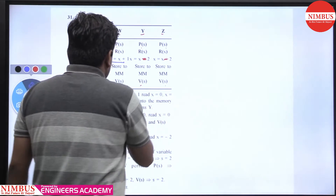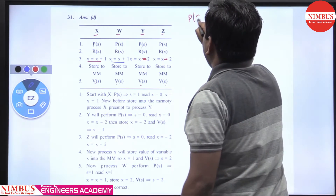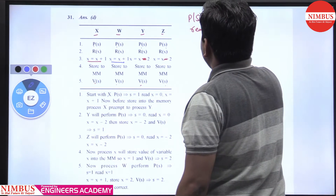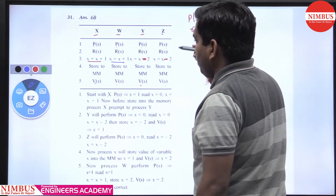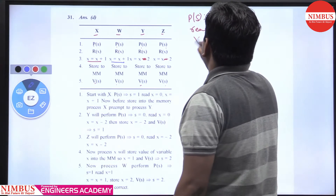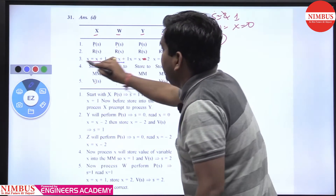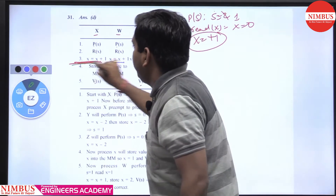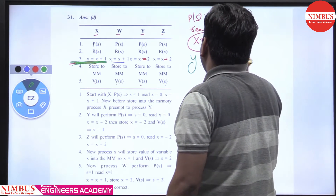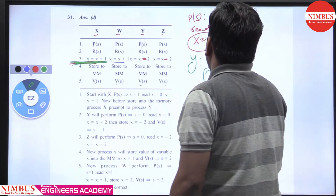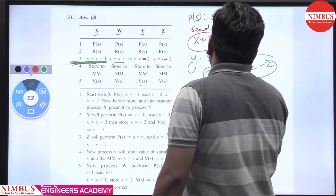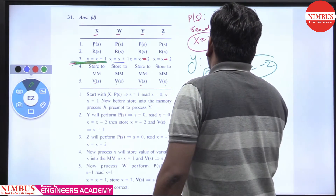We start with process x. First, perform P(s) — s becomes 1. Read x, x equals 0. We increment x to plus 1, but we preempt here at line 3 before storing. Now we enter process y because s equals 1, which becomes 0. Read x — x is 0. Compute x equals minus 2, then store x equals minus 2 in main memory. V(s), s goes from 0 to 1.